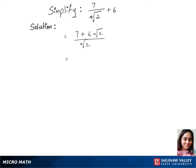Let's rationalize this now. So let's write 7 plus 6 times 4th root of 2 over 4th root of 2, and multiply 4th root of 2 cubed over 4th root of 2 cubed.